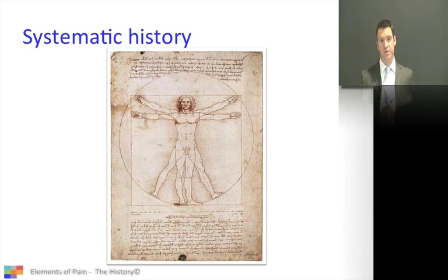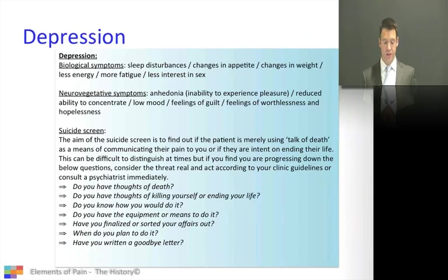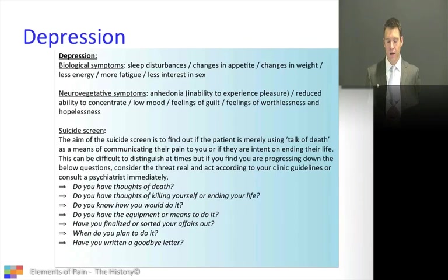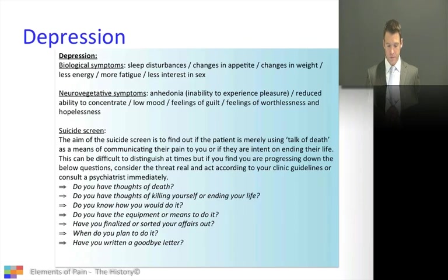So take a considered history. When taking a systemic history, I consider the biological and neurovegetative features of depression. This is where I consider asking myself if this patient is depressed and go about making a diagnosis — considering biological symptoms and neurovegetative symptoms. They're there for you to read and we all pretty much know them.